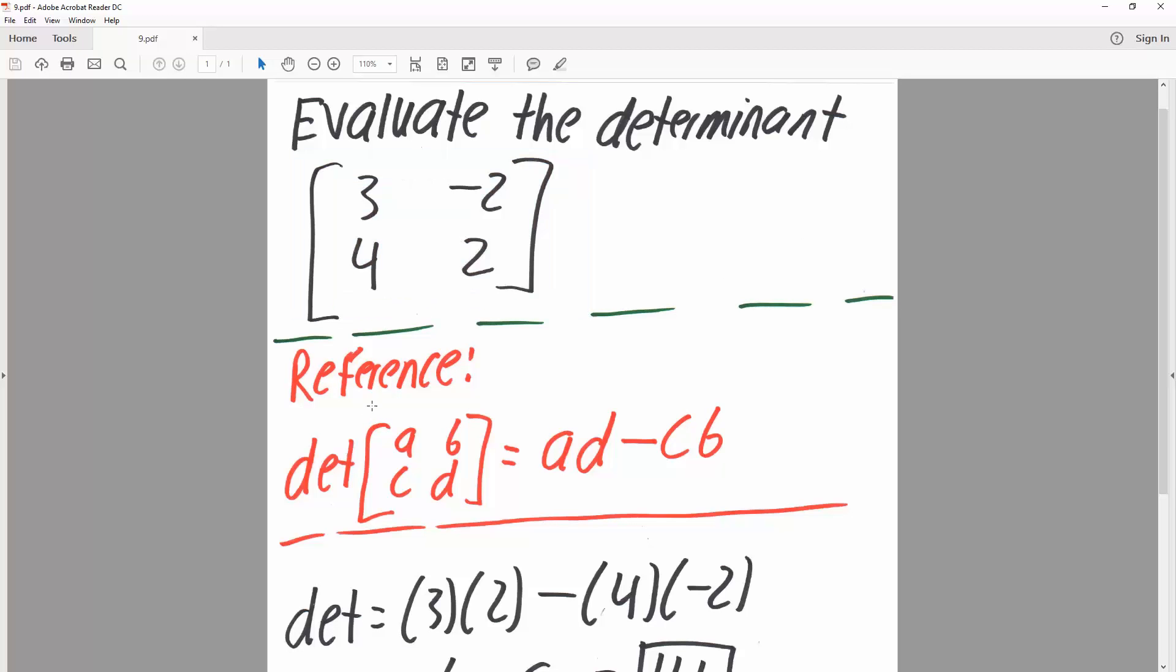And so as a reference, if the matrix was A, B, C, D like this, and we wanted to get the determinant, it would be A times D minus C times B.